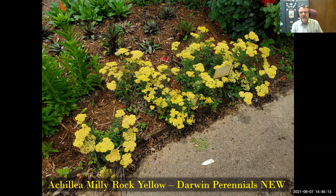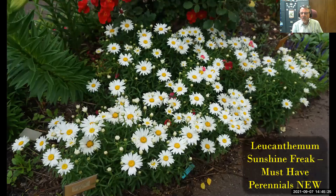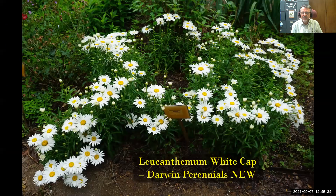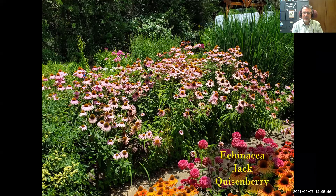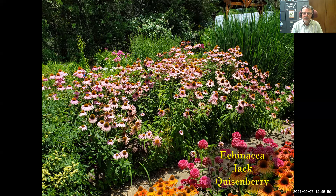Achillea from the Milly Rock series — Darwin Perennials has been adding colors; the latest is yellow, now in its second year having been new last year. We also have a couple of Leucanthemums in their second year — Sunshine Freak and White Cap performed very well. These aren't long-lived perennials, but you get some first-year flowering and a really nice display in the second year. Echinaceas are doing well — a lot of the more recent breeding has been really cool. They're short-lived at best but lasting a lot longer and giving more spectacular floral displays than in the past.